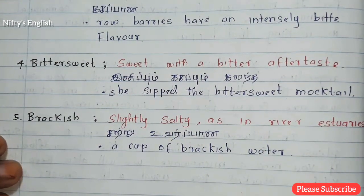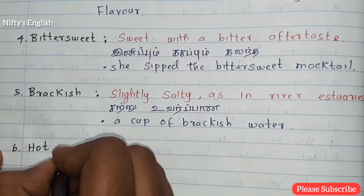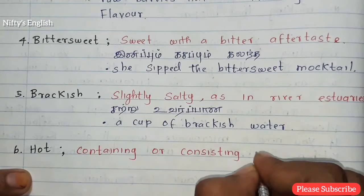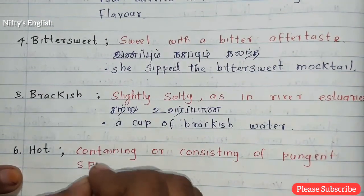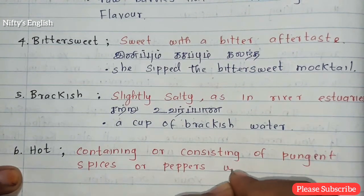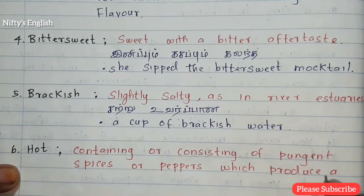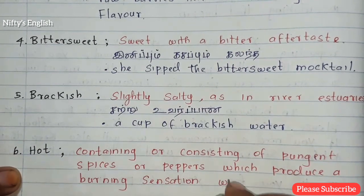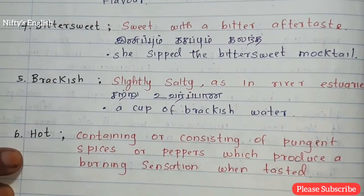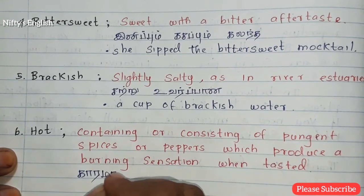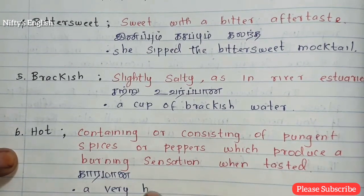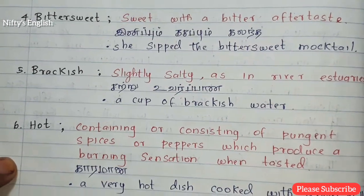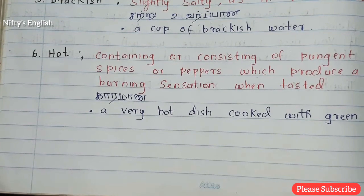The sixth one is hot — containing or consisting of pungent spices or peppers which produce a burning sensation when tasted. Hot means kaaram in Tamil. For example: a very hot dish cooked with green chili.